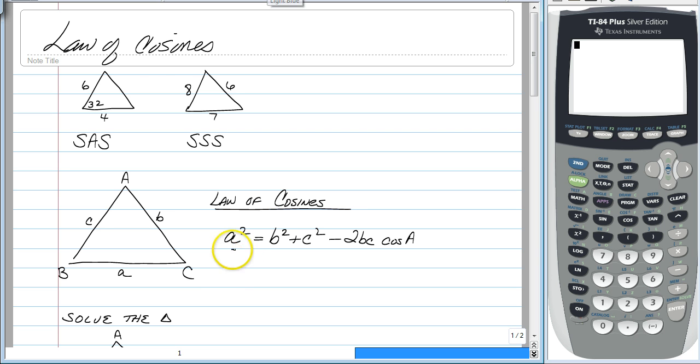But a really good skill to have is to be able to manipulate it. So if you want to find side b or angle b, they need to be on the ends, one of the ends. So then the only thing you would do is switch this to b squared equals a squared plus c squared minus 2ac cosine of b.